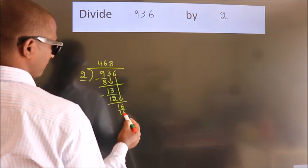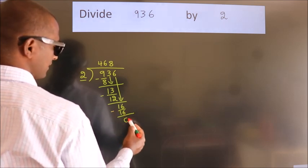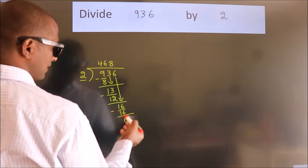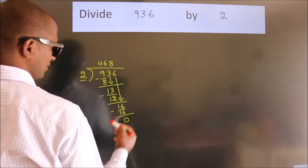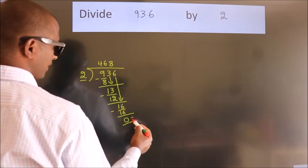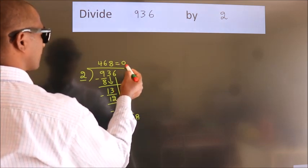Now we subtract. We get 0. After this, no more numbers to bring it down, so we stop here. This is our remainder. This is our quotient. So thank you.